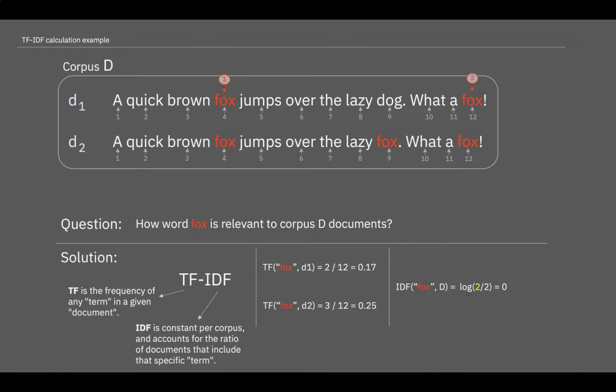In this equation at the upper side we need to look at how many documents in our corpus contain the given word fox. Now we see that the word fox appears in document number 1 and in document number 2. So at the upper side of our equation we need to input a value of 2.